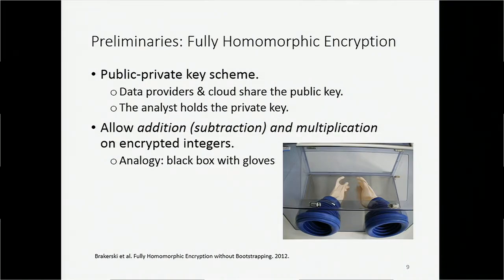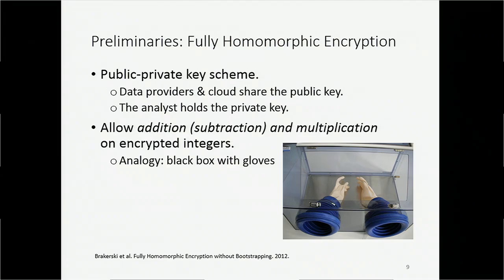First, a brief introduction about fully homomorphic encryption. We use a public-private key scheme in our research. We assume all the data providers and the cloud share the same public key, and the analyst holds the private key. Since we are using fully homomorphic encryption, we can do addition and multiplication on the input integers. I would like to draw an analogy between fully homomorphic encryption and a black box with a glove attached on it, so that we can operate on things inside without really touching them.